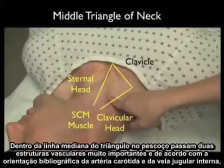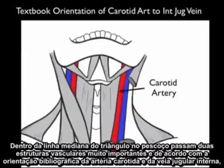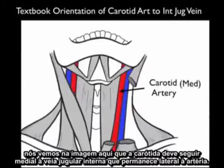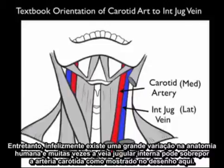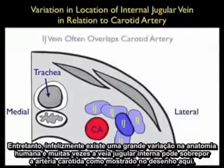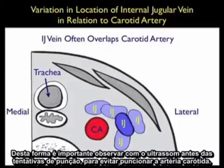Within the middle triangle of the neck run two very important vascular structures. As per the textbook orientation, the carotid artery should run medial to the internal jugular vein, which lies lateral to the artery. However, unfortunately, there's great variability in human anatomy, and many times the internal jugular vein can overlap the carotid artery. Notice the variation in location — many times the internal jugular vein is located on top of the carotid artery, making it difficult to cannulate. Thus, it's important to look with ultrasound before cannulation attempts to avoid puncture to the carotid artery.